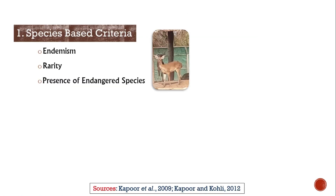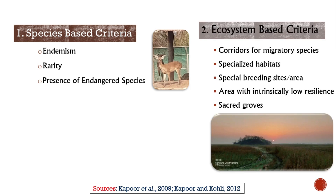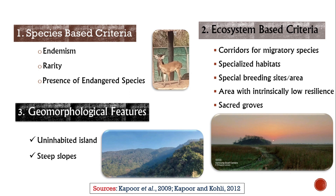Species-based criteria will be based on endemism, rarity, and the presence of endangered species. Ecosystem-based criteria include corridors for migratory species, specialized habitats, species breeding sites, and areas with intrinsically low resilience. Geomorphological features criteria include uninhabited islands and steep slopes. These are the criteria to be adopted for declaring any area as an eco-sensitive area.